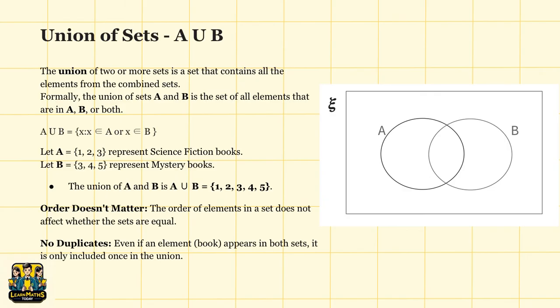For example, if we have A equal to the set of 1, 2, 3, and B equal to the set of 3, 4, 5, the union of set A and B will be the set containing 1, 2, 3, 4, 5. Notice that the number 3 appears in both sets, but in the union, you only list it once because there are no duplicates in sets.